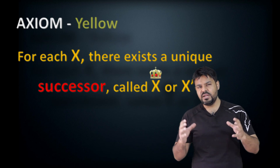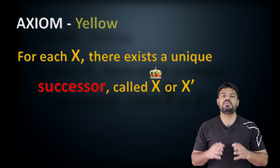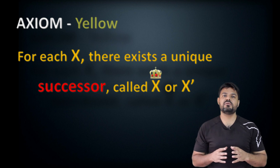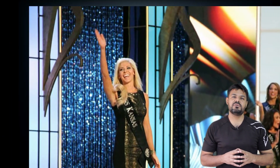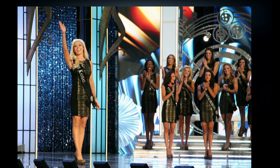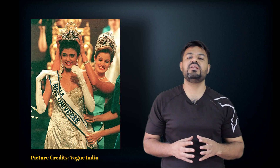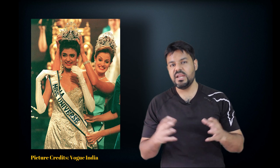The next axiom is Axiom Yellow, which states that if we denote a natural number by the letter x, there exists a unique successor of that number, denoted by x prime. To understand successors, our axiom system resembles the Miss Universe beauty pageant. Sushmita Sen, Miss Universe of 1994, was the successor to the Miss Universe of 1993, Dayanara Torres — she was the unique and only successor, because each year there is only one crowned Miss Universe and you can only compete once. Just like our natural numbers, there is only a unique successor.